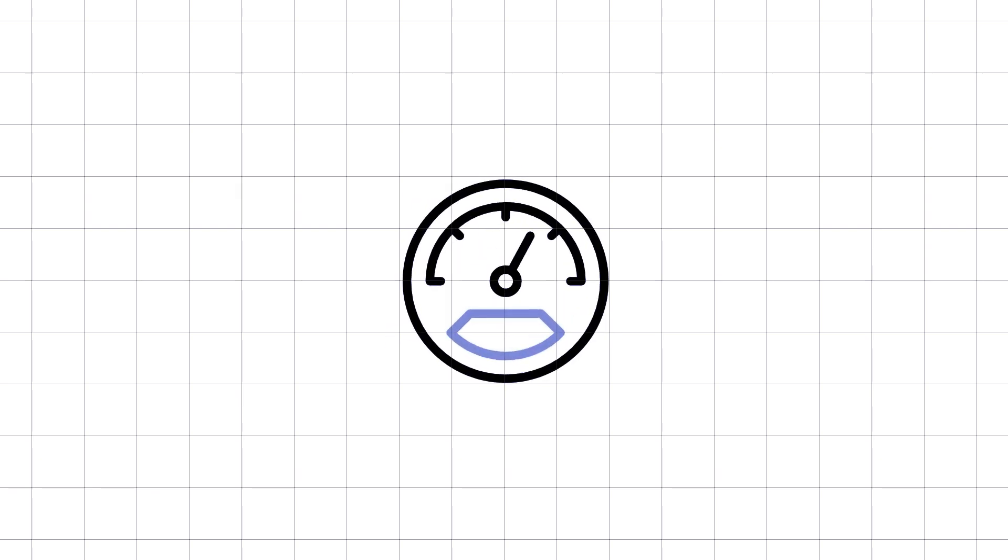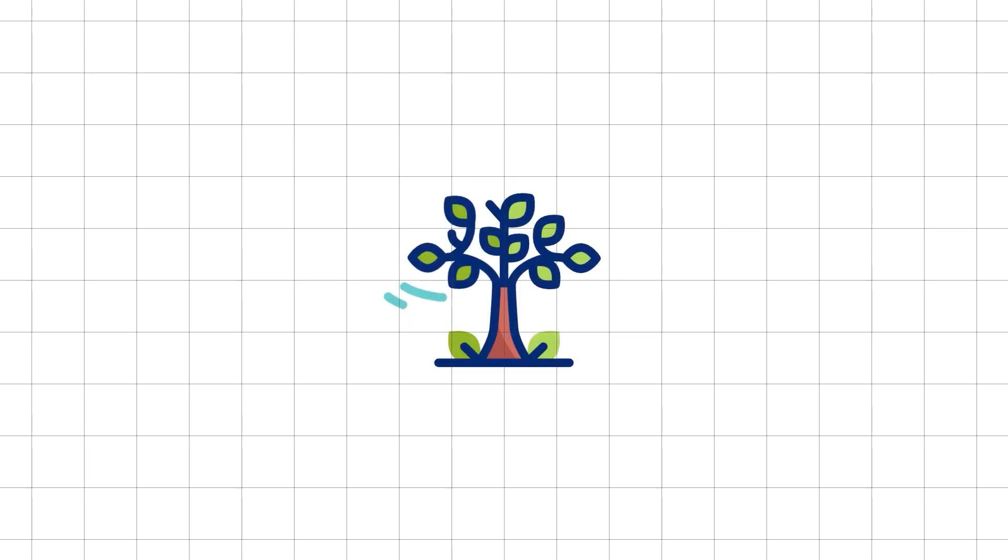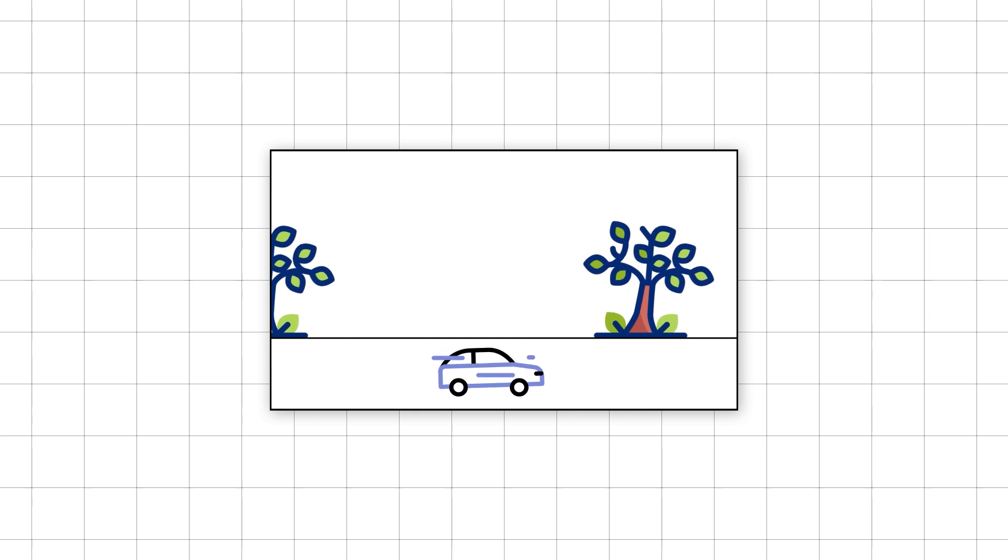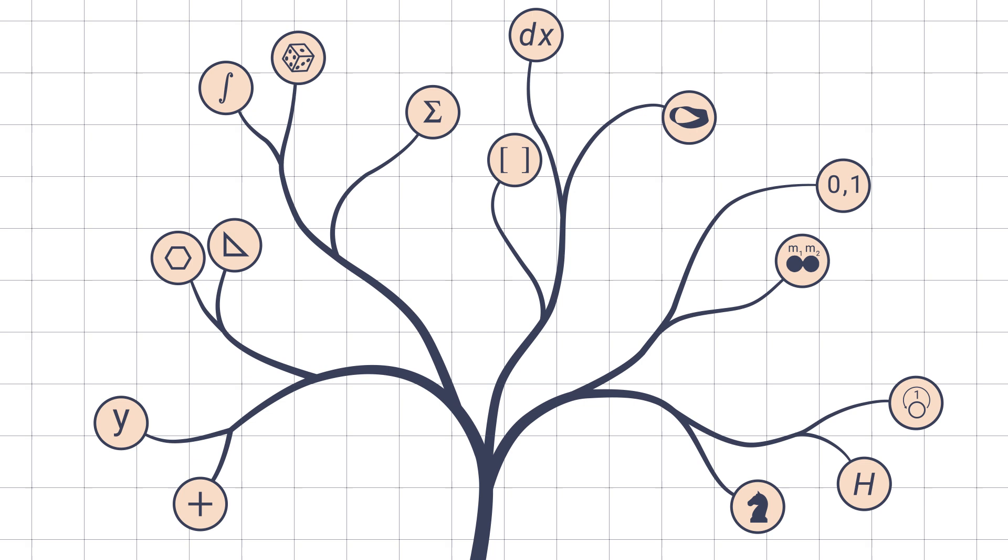Math is everywhere. It's in the way your car speedometer works, the pattern of leaves on a tree, and even in the way video games create realistic graphics. But math isn't just one big thing, it's made of different branches, each unlocking unique ways of understanding the world. Let's break them down.